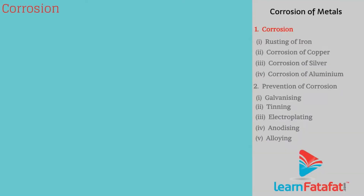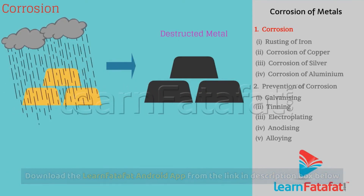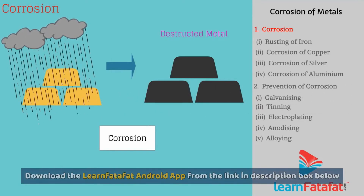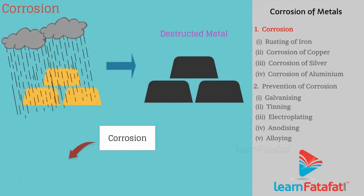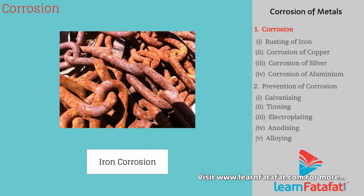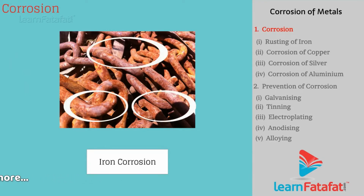Corrosion. The gradual destruction of metal due to the effect of its surrounding environment is called corrosion. Due to corrosion, properties of metal degrade. The familiar example of corrosion is iron. You might have seen the brown colour appearing on things made of iron — this is due to corrosion.